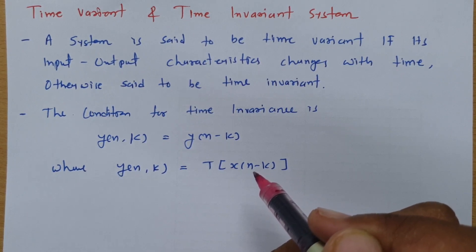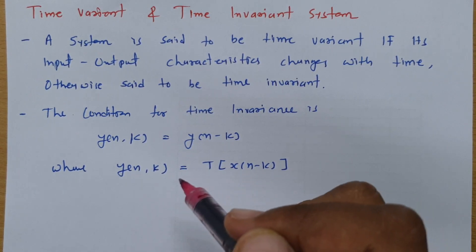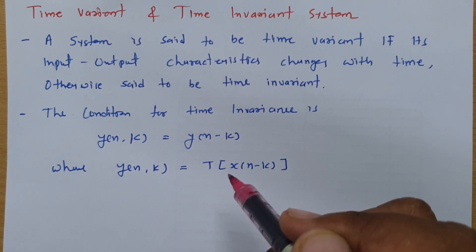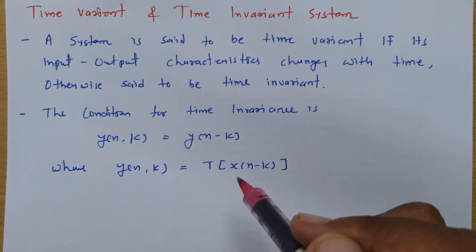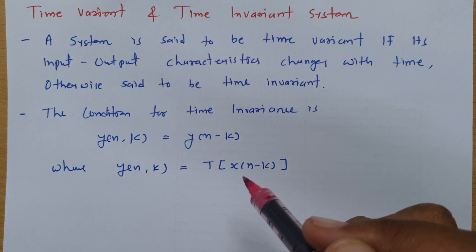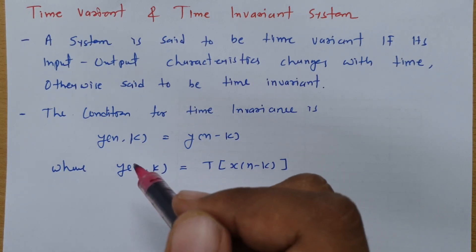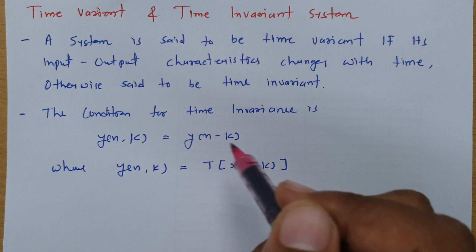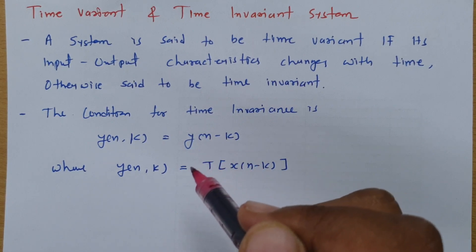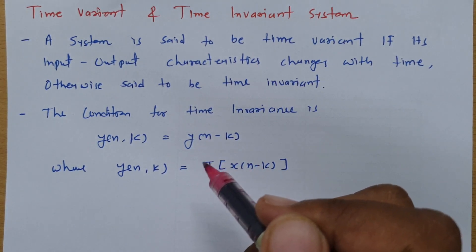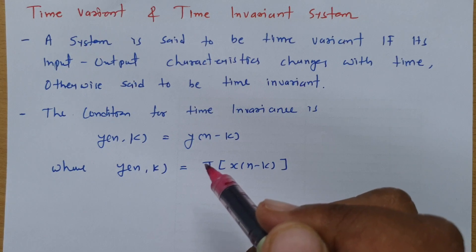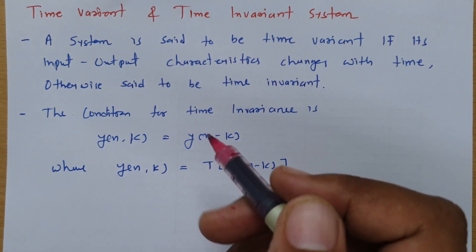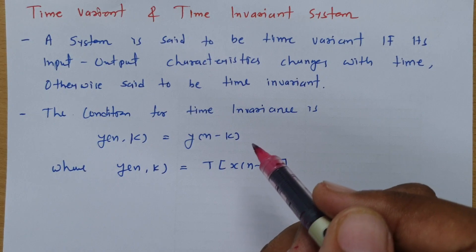You don't need to change any other variables. You will have to change only the input from x(n) to x(n minus k). That is what y(n, k) means. And y(n minus k) means you will have to replace n with n minus k. That is the difference. To understand this, let us look at some examples so it will be more clear.